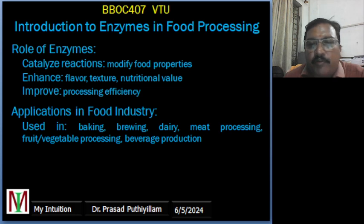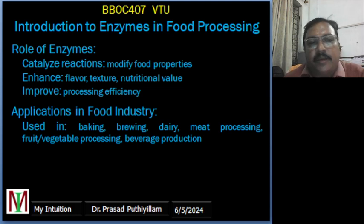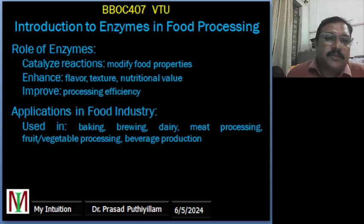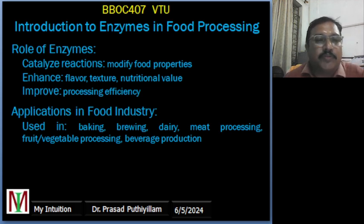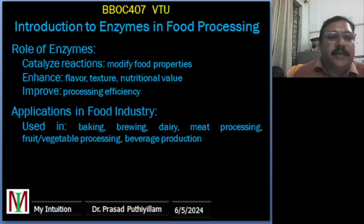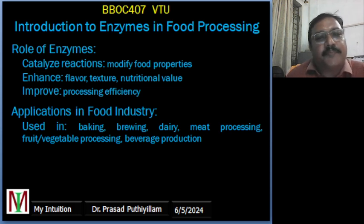In food processing, enzymes play a very crucial role by catalyzing biochemical reactions which modify food properties — they enhance the flavor, texture, nutritional value, and improve the processing efficiency of food. They are naturally called biological catalysts; these enzymes are actually proteins which accelerate chemical reactions without being consumed in the process. In the food industry, they are widely used in various food processing applications including baking, brewing, dairy, meat processing, fruit and vegetable processing, and beverage production.